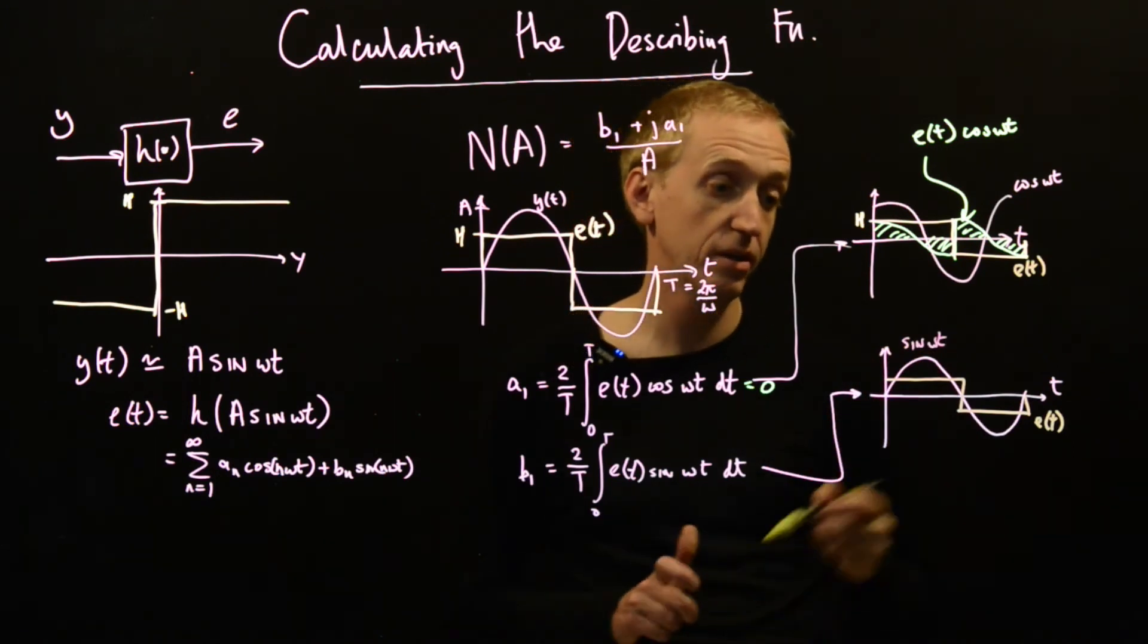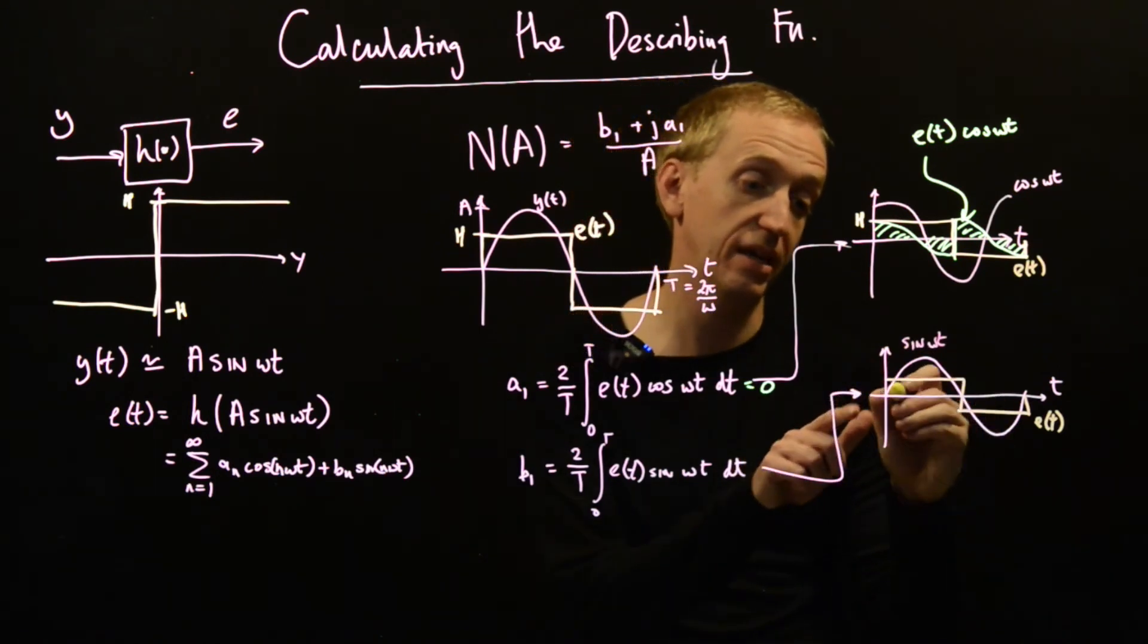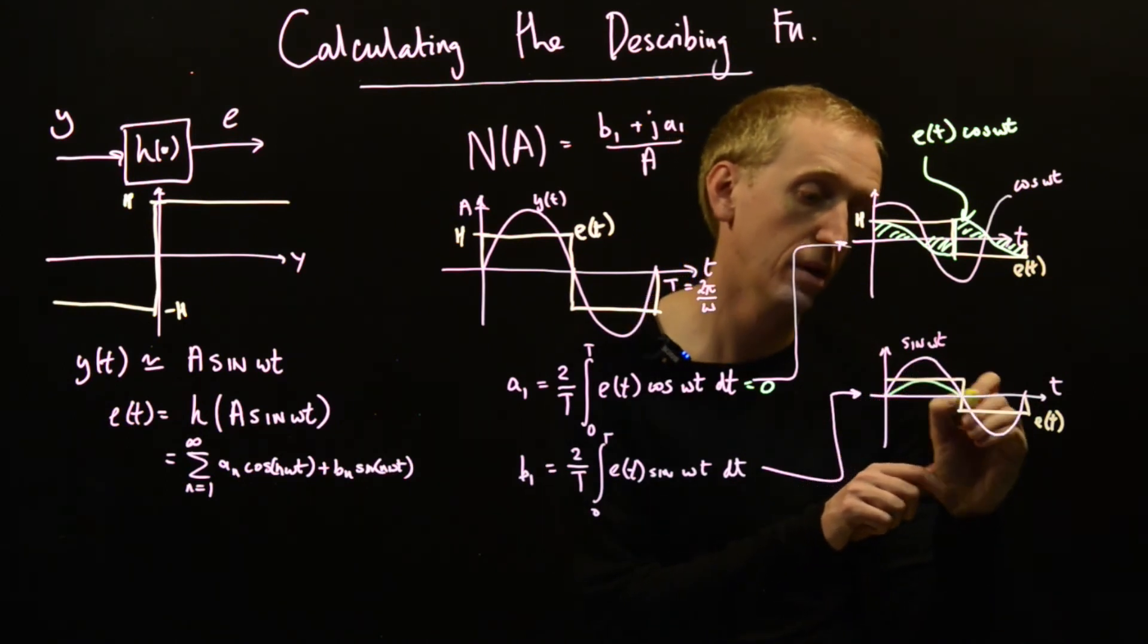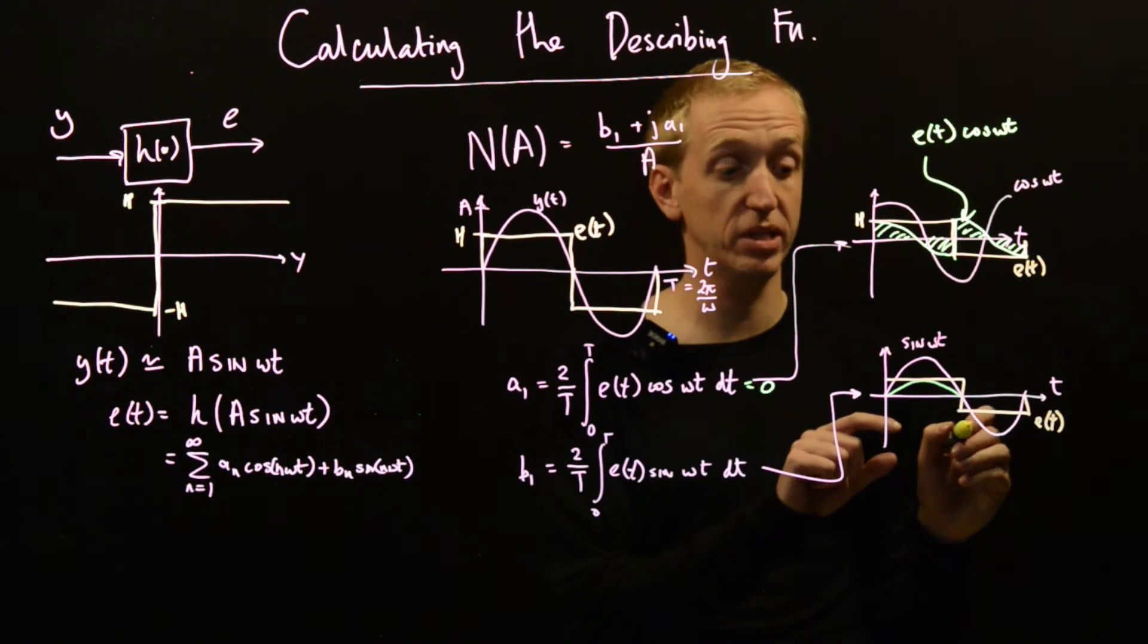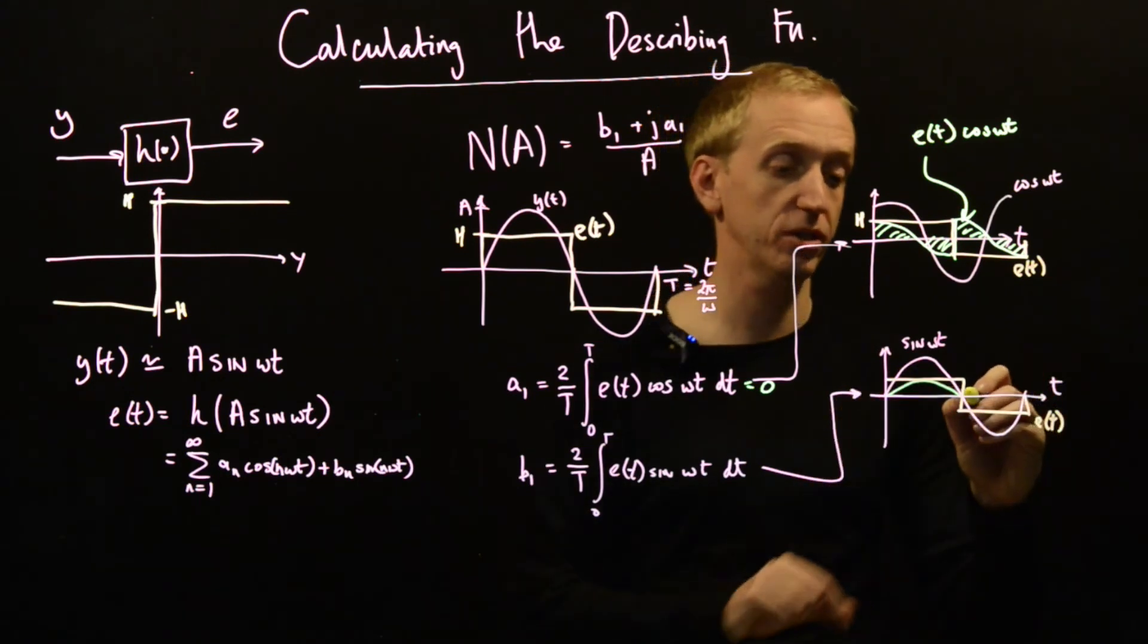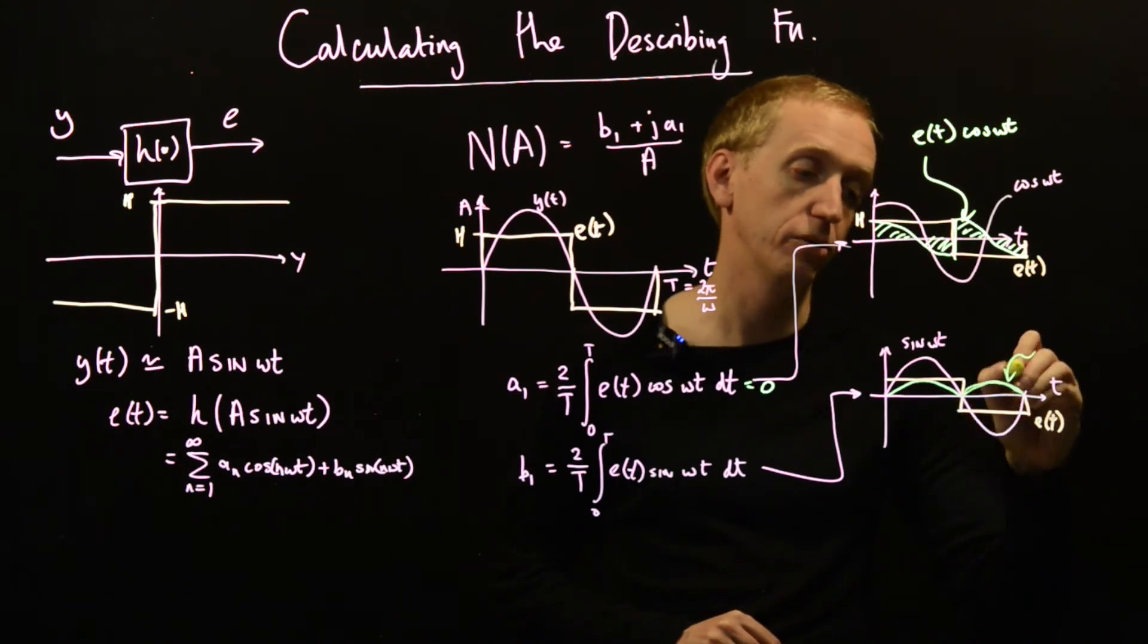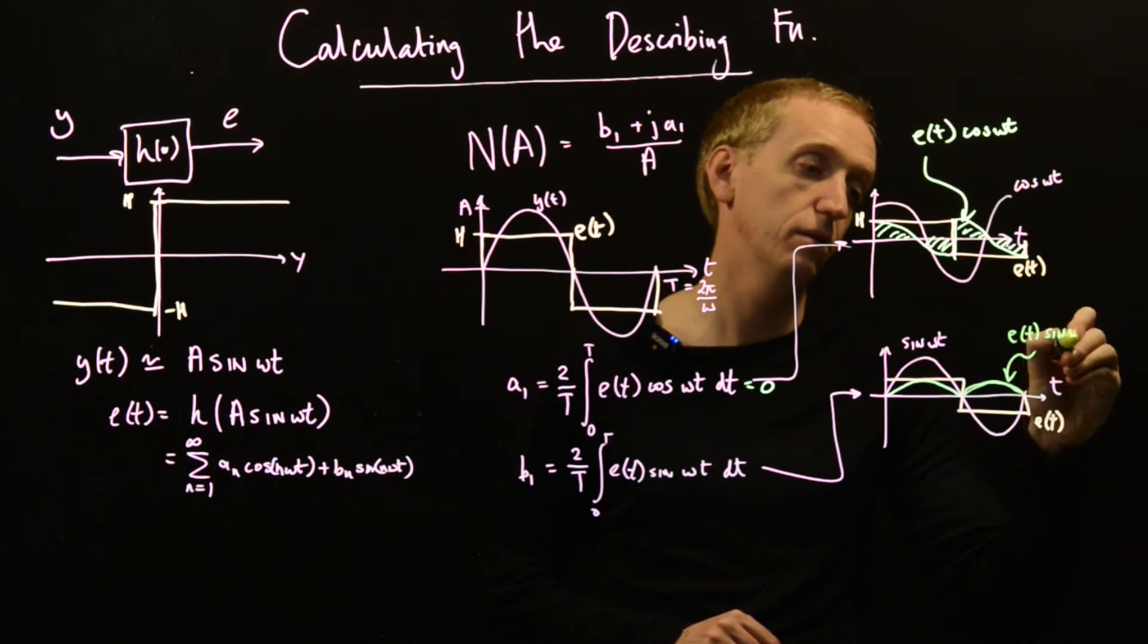And what is the product? Well, here the signs are the same. So we just get a scaling of the sine wave like before. And here both the signs are negative. So when we take their product, the effect is to just get the same thing, but now mirrored. So this curve here, this is e(t)sin(ωt).